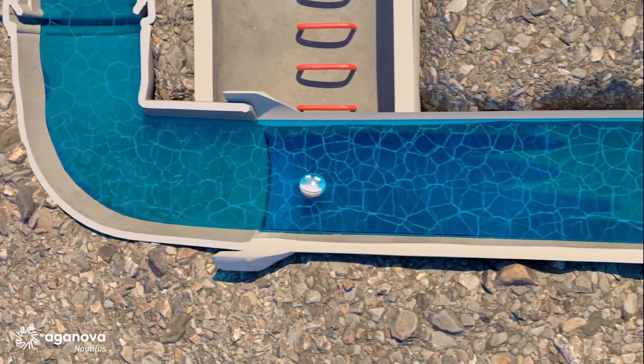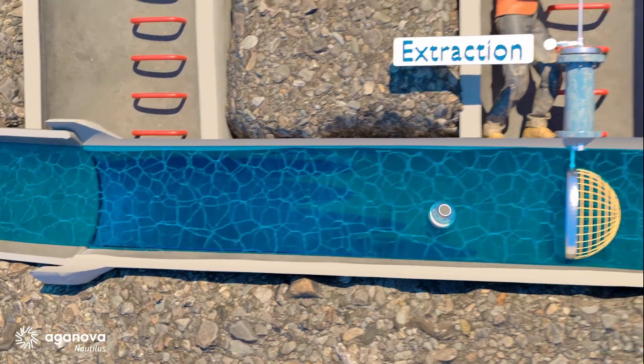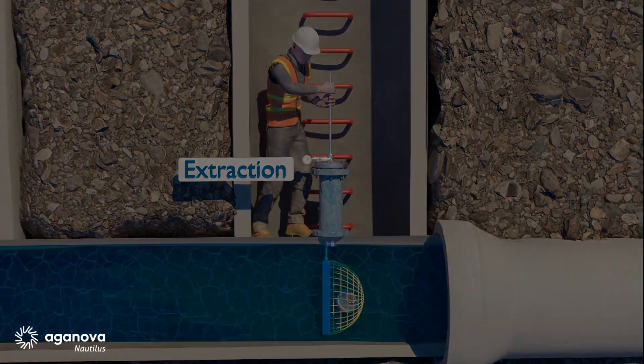Once the inspection is complete, Nautilus is retrieved, and its collected data is processed in NEMO to generate a detailed report.